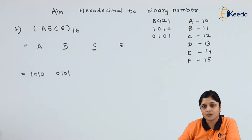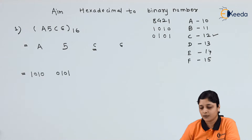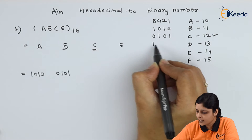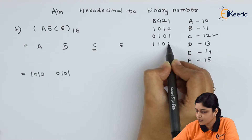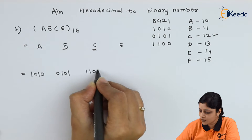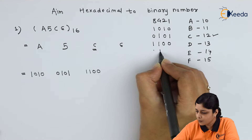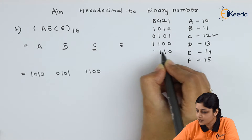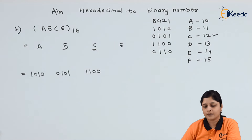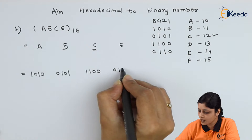For C, first take its decimal value. The decimal value for C is 12. 8 plus 4 gives you 12, so binary 1100 represents C. For 6, 4 plus 2 gives you 6, so binary for 6 is 0110.